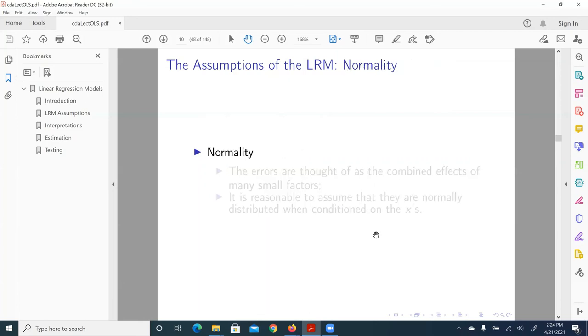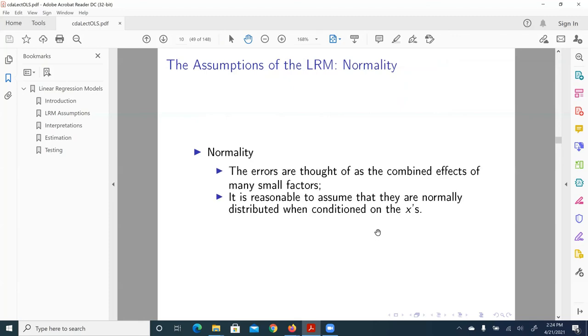Next is normality. That is, the errors are thought of as the combined effects of many small factors. So in general, we assume that we've taken into account all major factors predicting or modeling of the response variable. And what's omitted? They're minor. And it is reasonable to assume that the error term is a collection of many small factors that follow normal distributions.